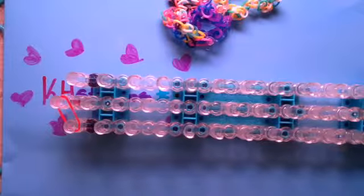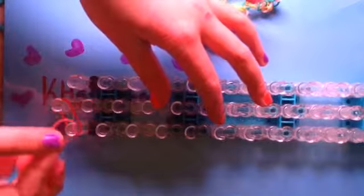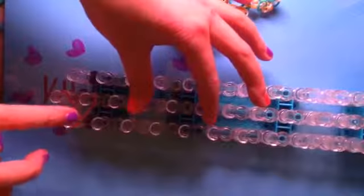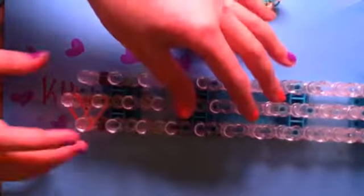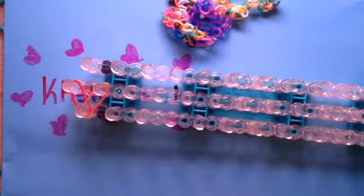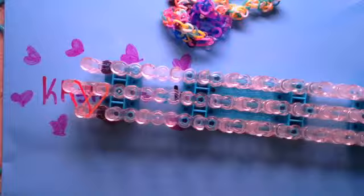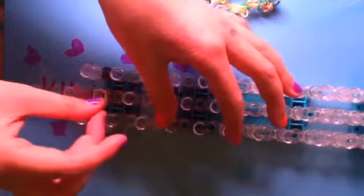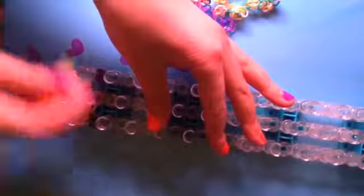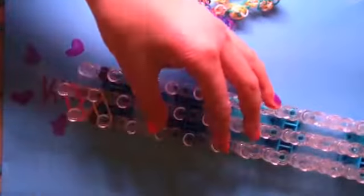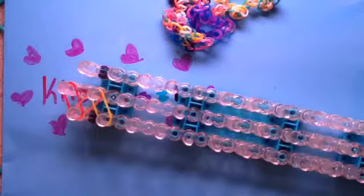Then you're going to take your next color—mine's going to be jelly orange—go from that peg to that peg, so you should kind of now have a V-shape. Then you're going to take your next color—mine's going to be jelly yellow—go from this peg where the orange ended, and then go from that peg there like this. You're just going to take your green and do the same thing down.